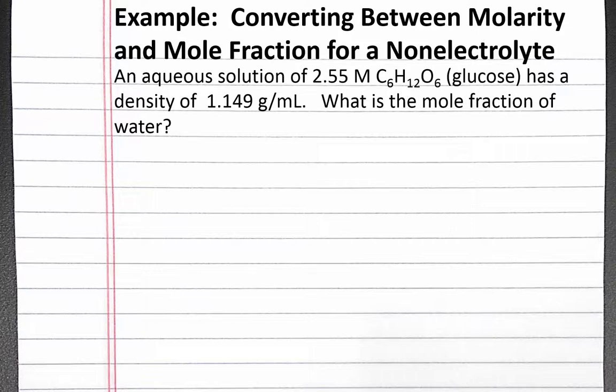Our problem reads: an aqueous solution of 2.55 molar C₆H₁₂O₆ glucose has a density of 1.149 grams per milliliter.